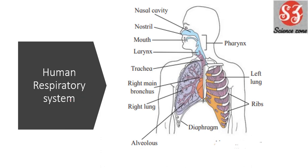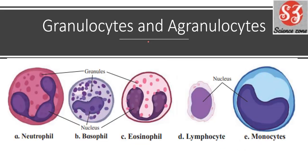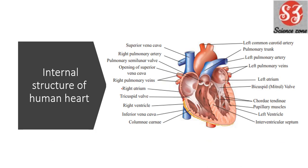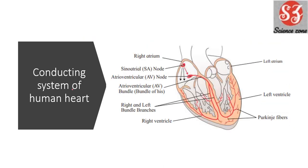Next is Chapter 8. The first diagram is human respiratory system — it is one of the diagrams but not extremely important since it's a bit complex. But to be on the safer side, you can prepare it. Next, granulocytes and agranulocytes — the five types are important and you should definitely prepare their diagrams. Next, internal structure of human heart — the textbook gives three structures: ventral, lateral, and internal, of which the internal structure is most important. Draw it both for explanation questions and neat labelled diagram questions. Next is the conducting system of human heart, also an important diagram — don't leave it as optional; prepare it to be on the safer side.